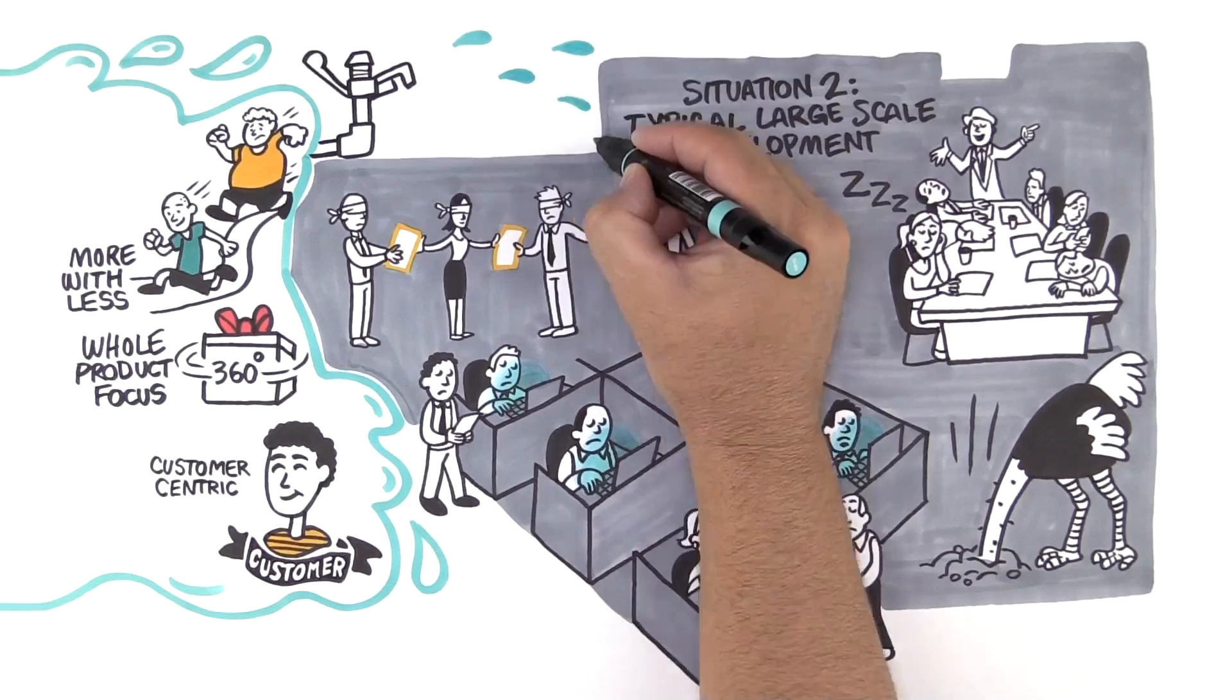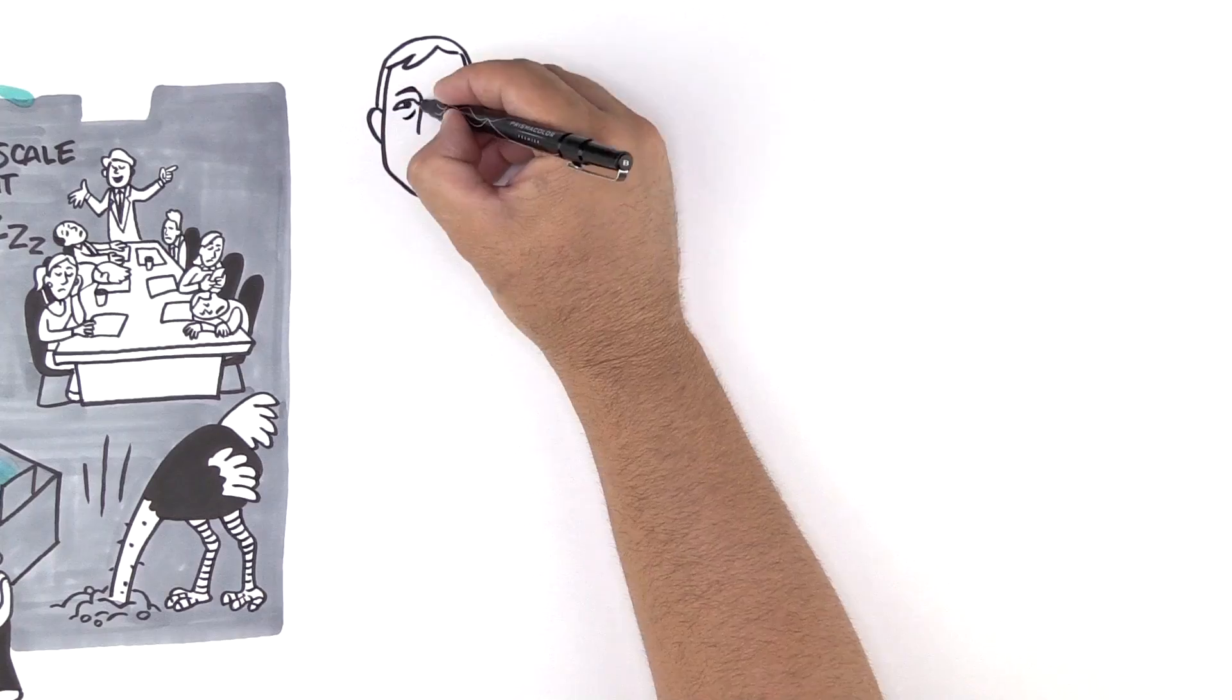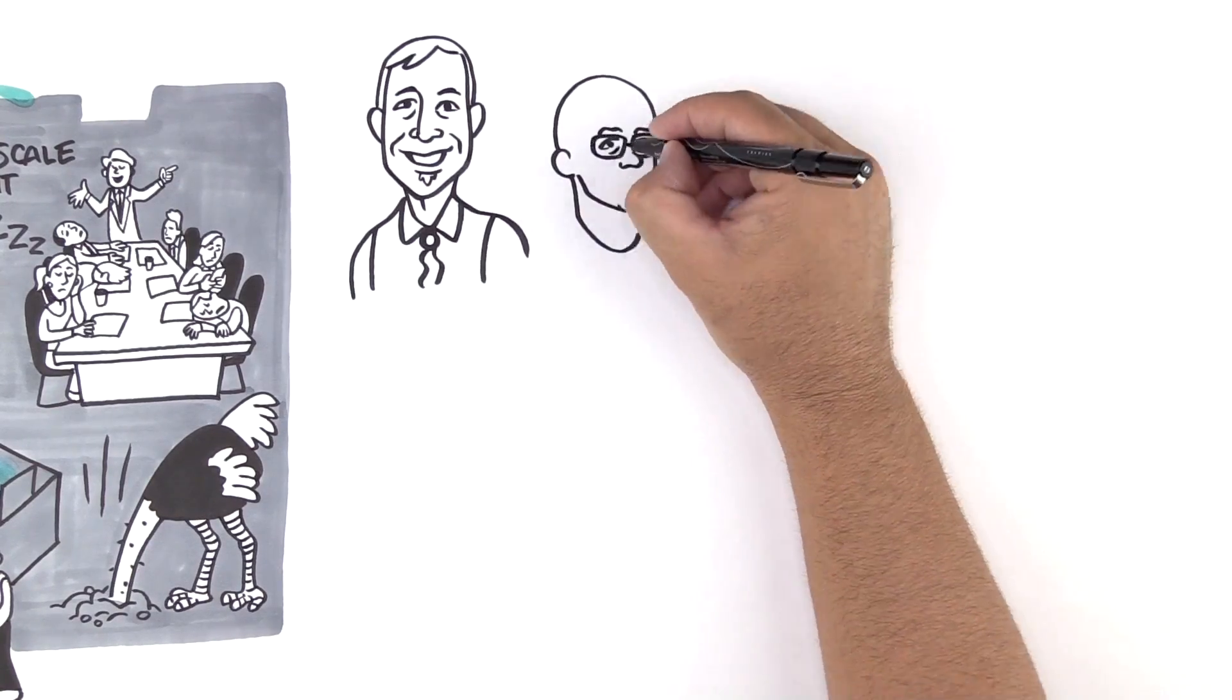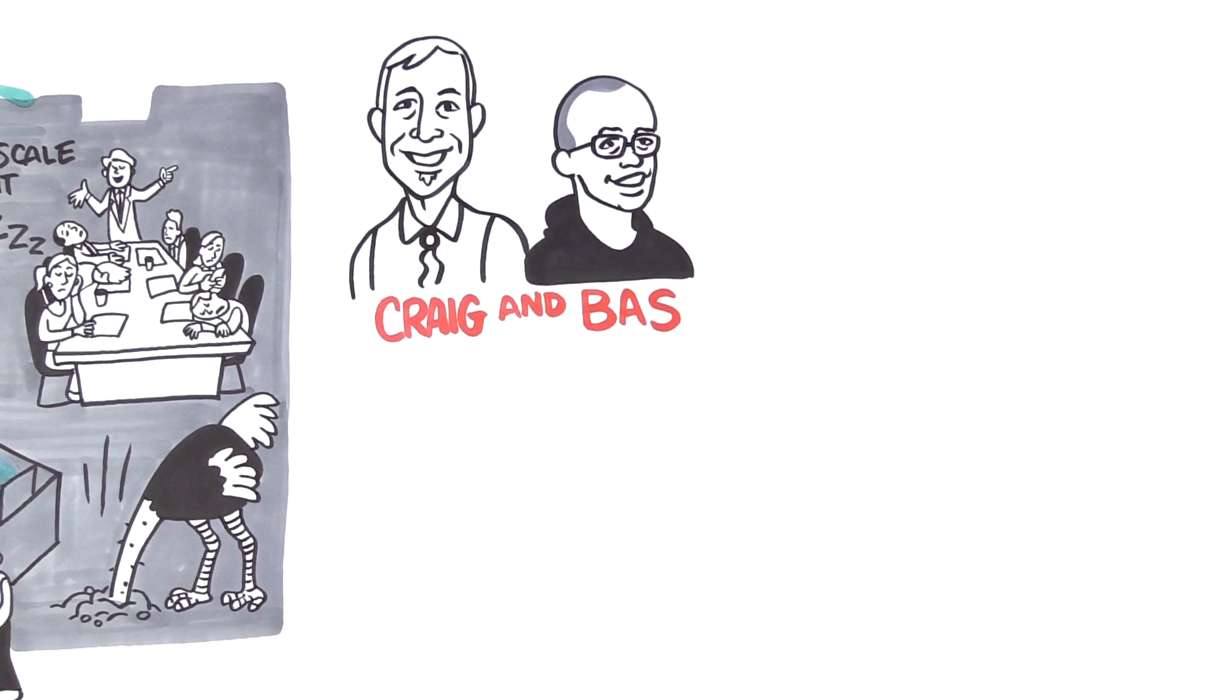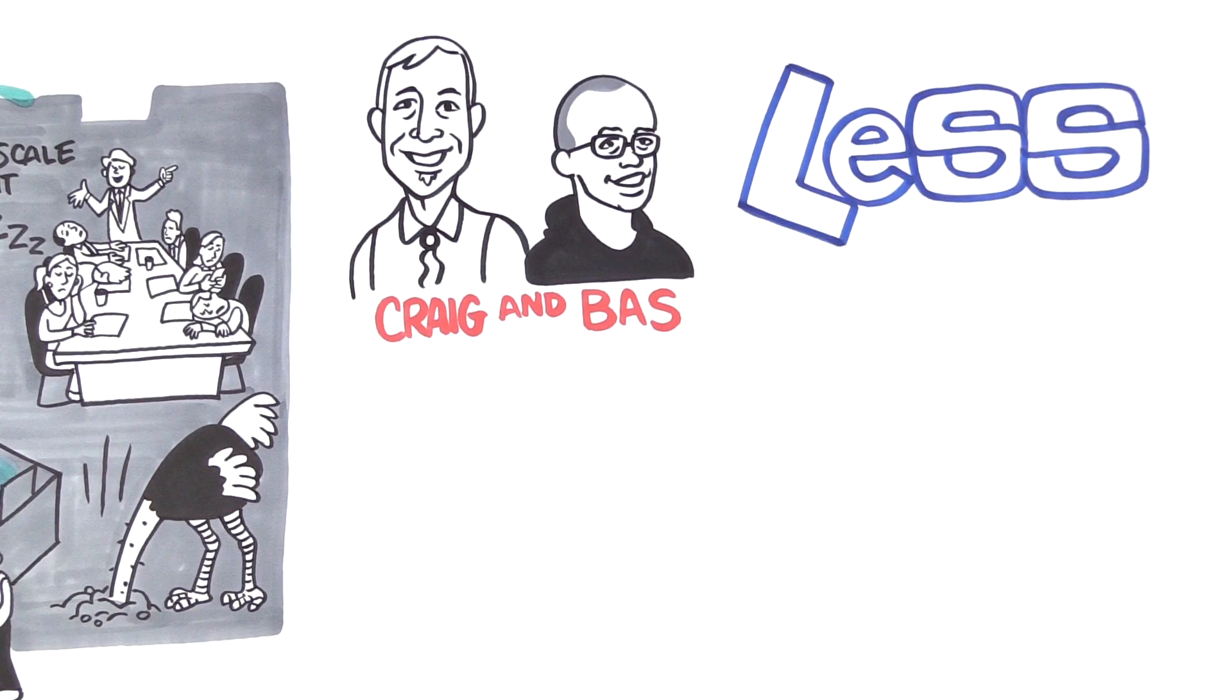Is it possible to take what works so naturally in small-scale development and apply it to large-scale development? This question has driven Craig Larman and Bas Vodde for over a decade.